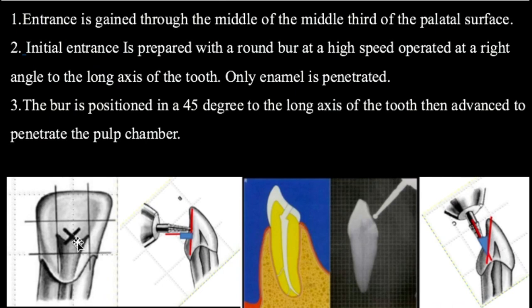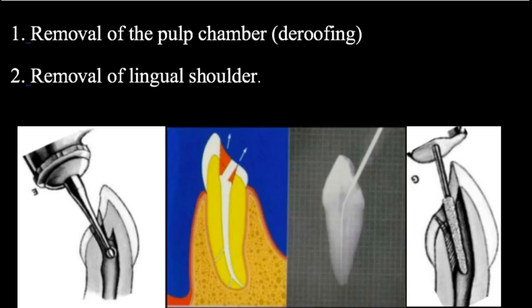Initially you should start penetrating at right angles. Once you penetrate only into the enamel, after that you can position the bur at 45 degrees so that you gain access into the orifice. You should completely de-roof the pulp chamber so that you will have a straight-line access, and you should also remove the lingual shoulder. The main principle of your traditional access cavity is having straight-line access — so you should de-roof the pulp chamber completely and remove the lingual shoulder so that you can place the file in a straight line.